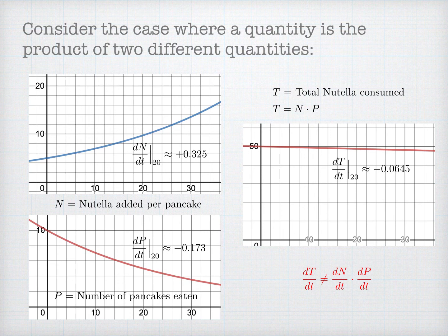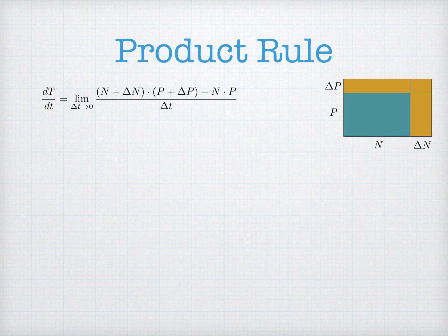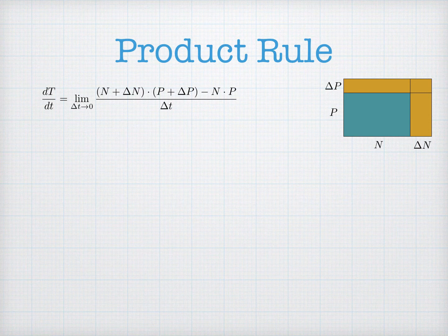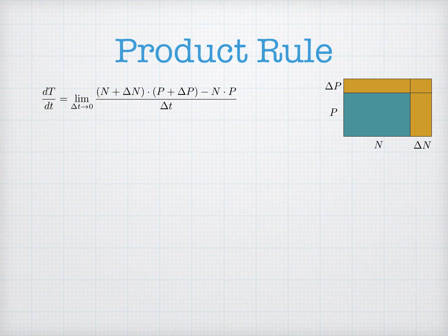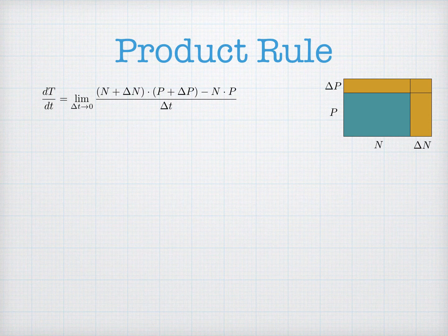So let's see if we can discover the right way to do this. We go back to the definition of the derivative. The definition says we're going to calculate the amount of Nutella at a second time minus the amount of Nutella at the beginning, divided by how much time has elapsed, and then take a limit as the time elapsed goes to zero. I have an orange rectangle and a blue rectangle. The blue rectangle is an area, n times p, representing the total amount of Nutella initially. The orange rectangle behind it is the amount of Nutella total at the end. My new amount of Nutella per pancake is n plus delta n, and the new number of pancakes is p plus delta p. So the total amount of Nutella at the end is the product of (n + Δn) times (p + Δp).